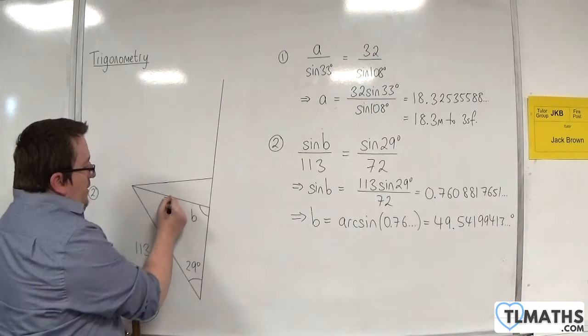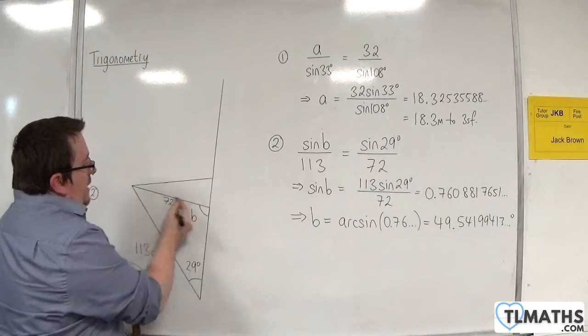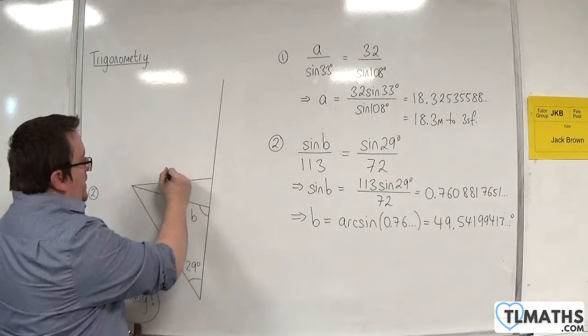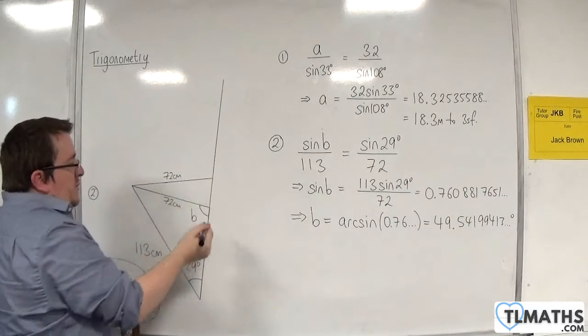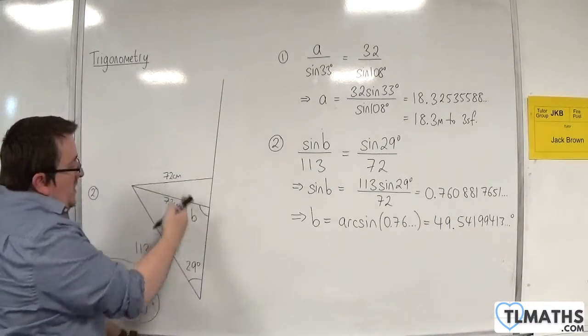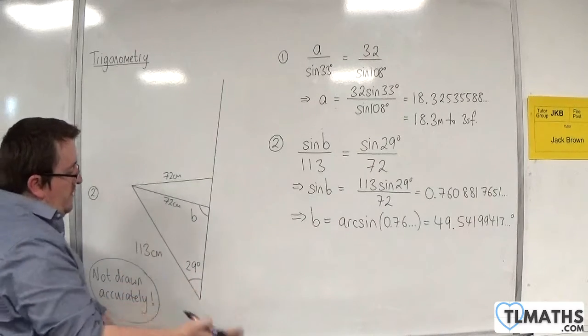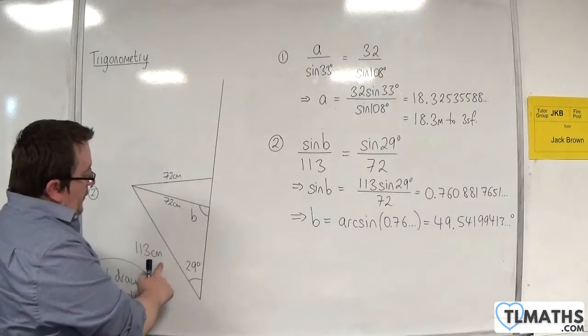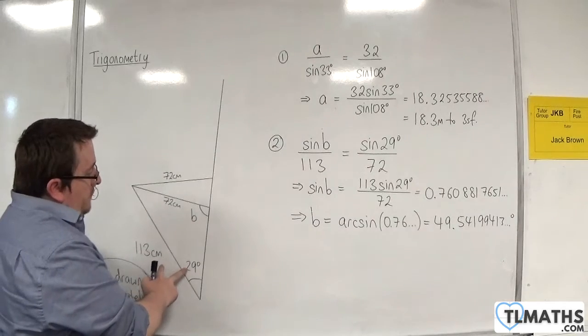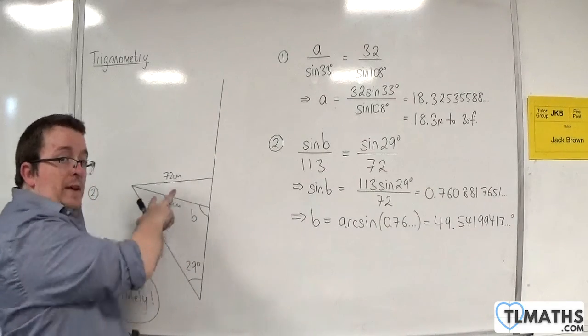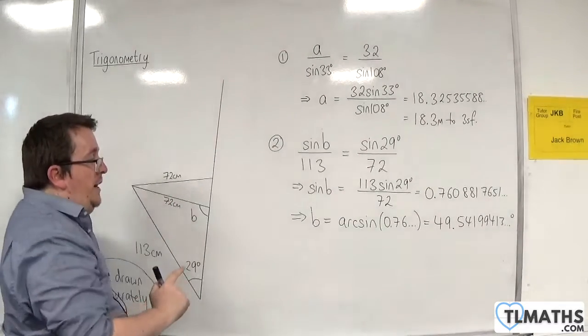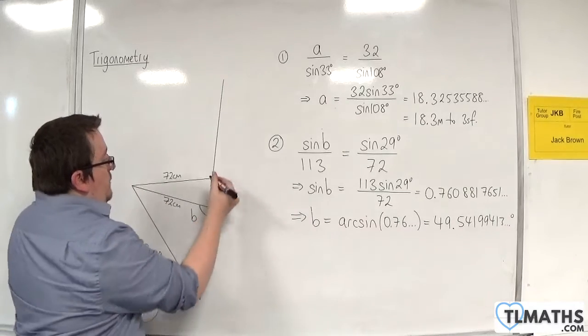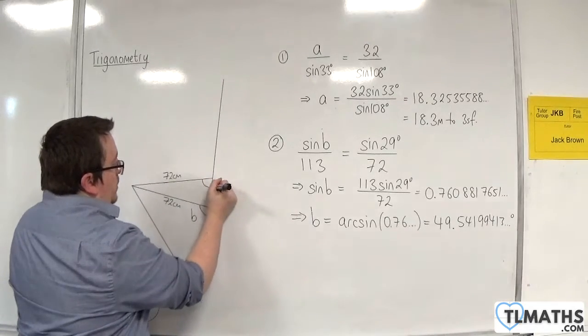In my diagram, I said that was 72 centimeters. That length and that length are now the same—they're both 72 centimeters. They retain the same information because the original information was this angle and this side. They've stayed the same. What's changed is the angle, so it actually gives you two possible angles.